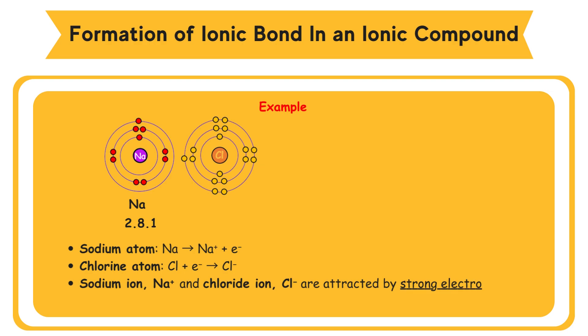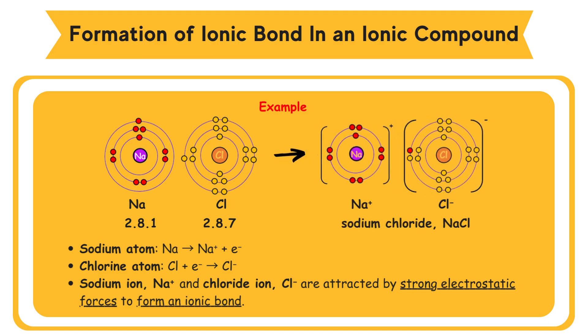The electron arrangement of chlorine atom is 2.8.7. Chlorine atom receives one electron from sodium atom, and a chloride ion is formed. Chloride ion achieves the octet electron arrangement. Sodium ion Na+ and chloride ion are attracted by strong electrostatic forces to form an ionic bond, and the ionic compound sodium chloride NaCl is formed. Draw a square bracket and write the charges at the top right corner. The electron shells do not overlap in an ionic compound.